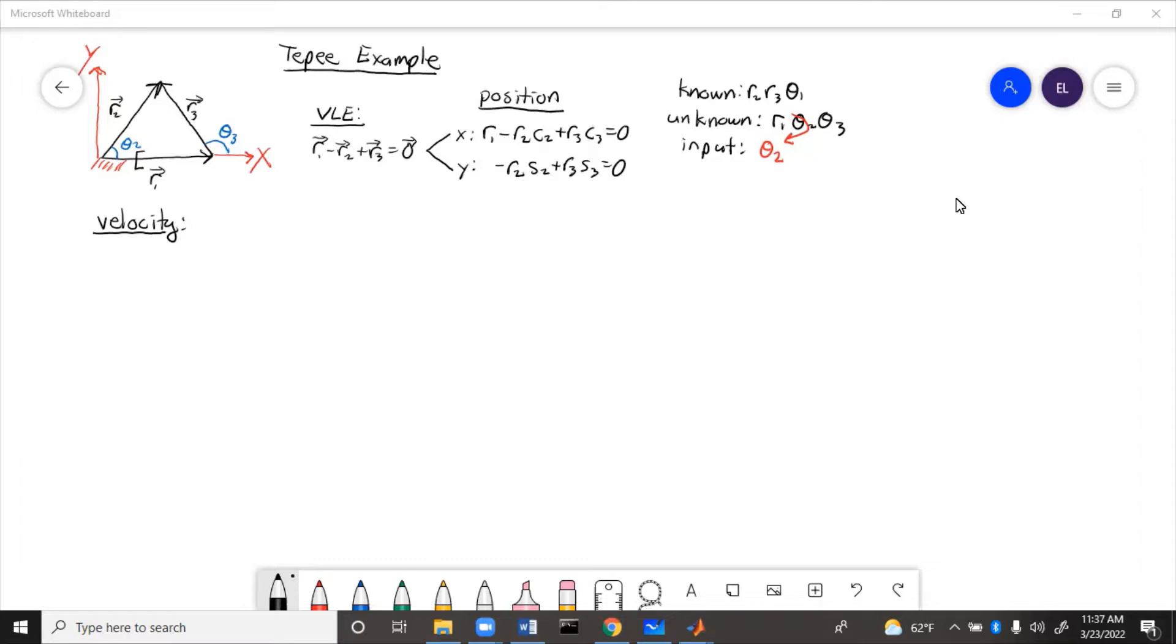So we've got here the TP, the vector loop and position equations, and knowns, unknowns input.